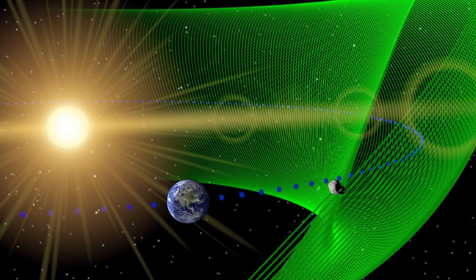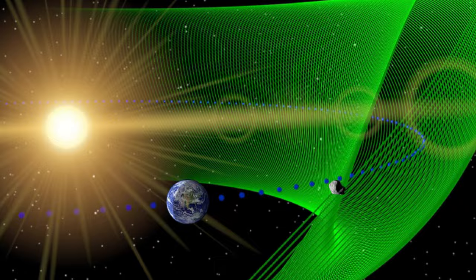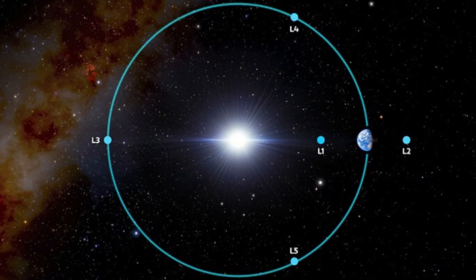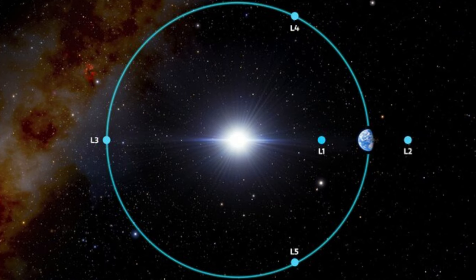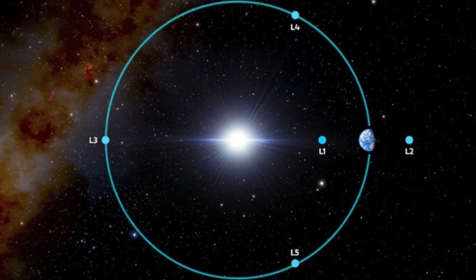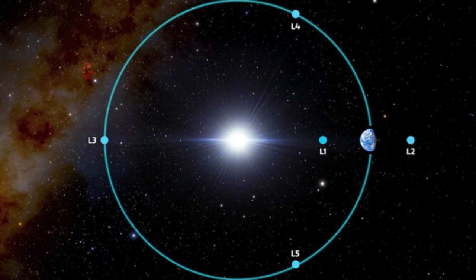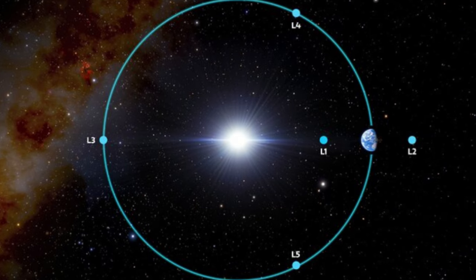SOAR's data allowed us to make a first photometric analysis of the object, revealing that 2020 XL5 is likely a C-type asteroid, with a size larger than 1 kilometer, says astronomer Tony Santaneros of the University of Alicante in Spain.